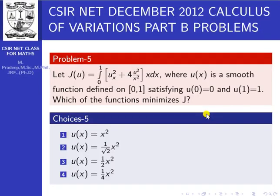Dear friends, today we are going to discuss the December 2012 Part B problem in the calculus of variations, and Part C problem 1 also. The first problem: let J[u] equal to integral from 0 to 1 of (u'x² + 4u²) divided by x² times x dx, where u(x) is a smooth function defined on [0,1] satisfying u(0)=0 and u(1)=1. Which function minimizes J?